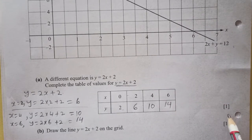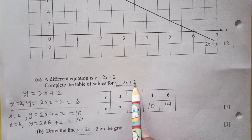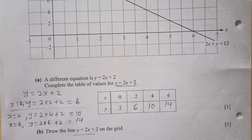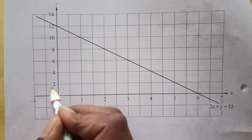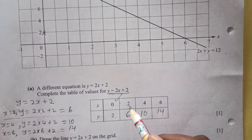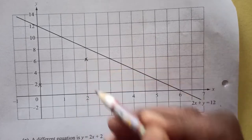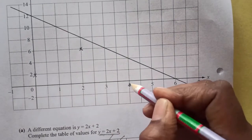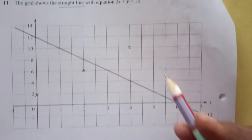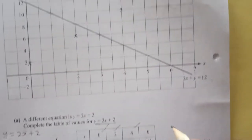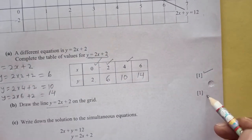You've done that for one mark. Now draw the line y = 2x + 2. We plot the points one by one: x=0, y=2; x=2, y=6; x=4, y=10; and x=6, y=14. Plot each point on the grid going along the axes carefully.